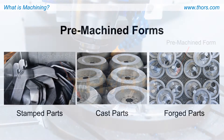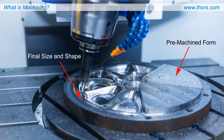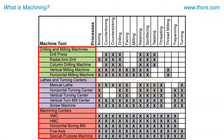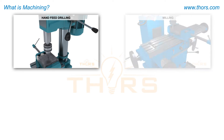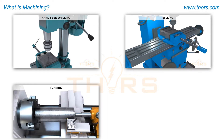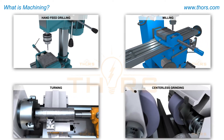A part would then be machined to achieve the final size and shape, or machined to prepare it for grinding. Using a machine tool, the workpiece is cut or shaped with various machining processes, the most common of which include drilling, milling, turning, and grinding.